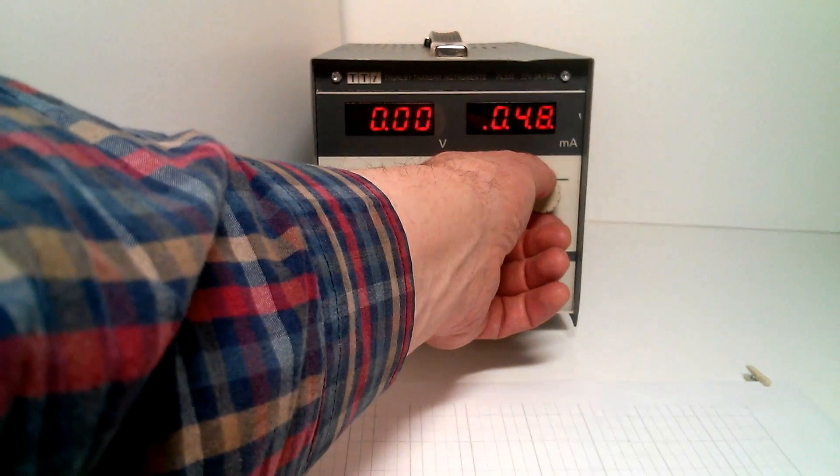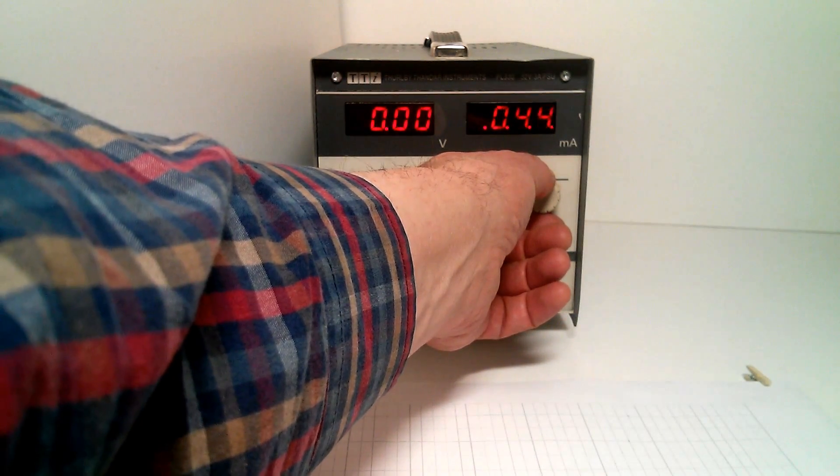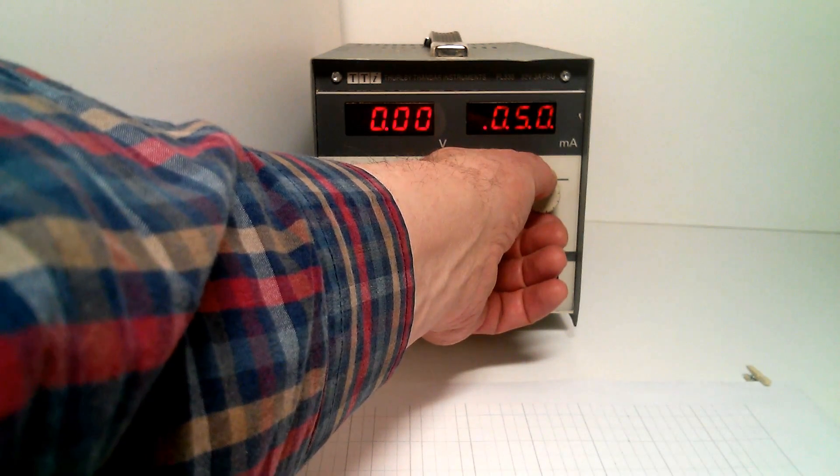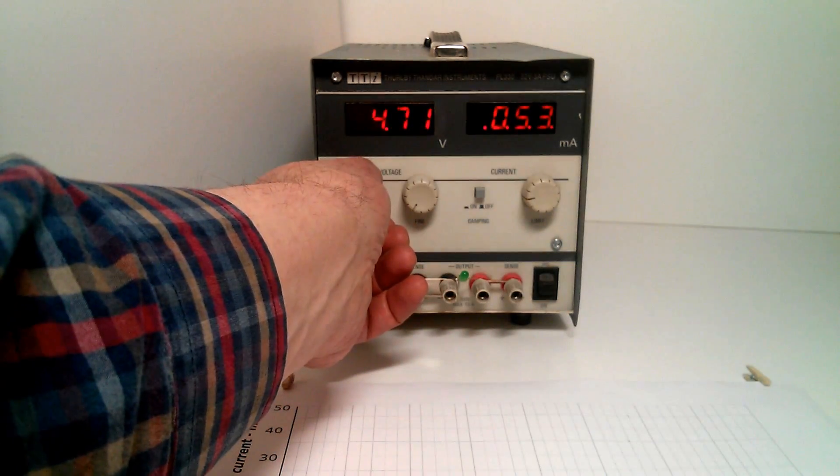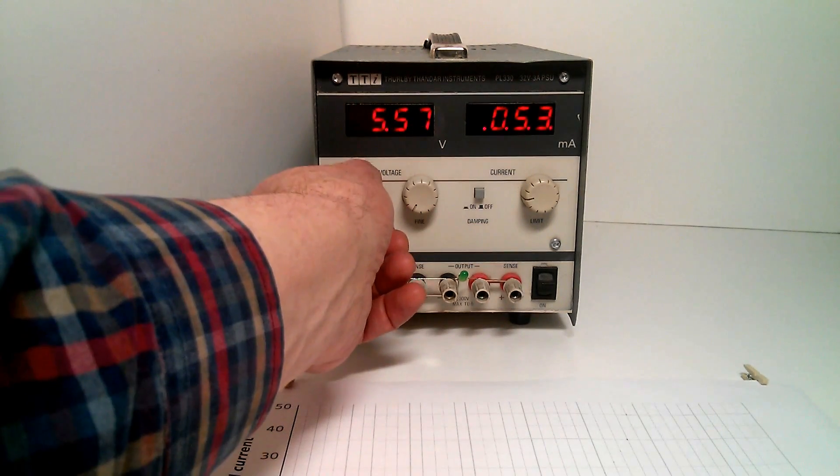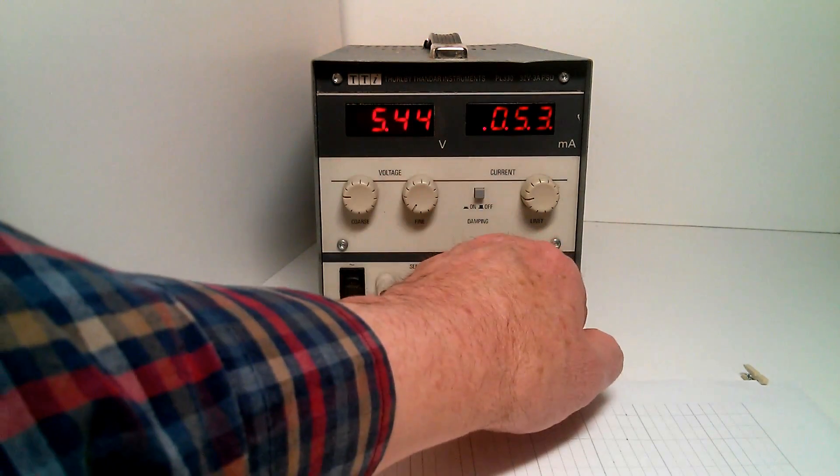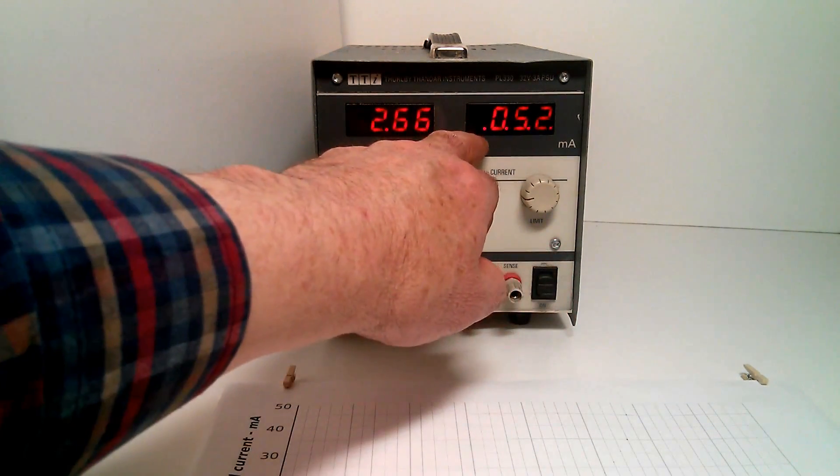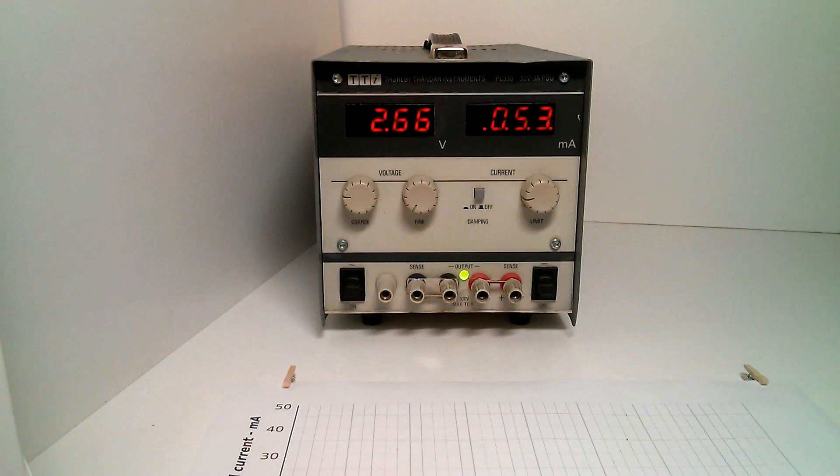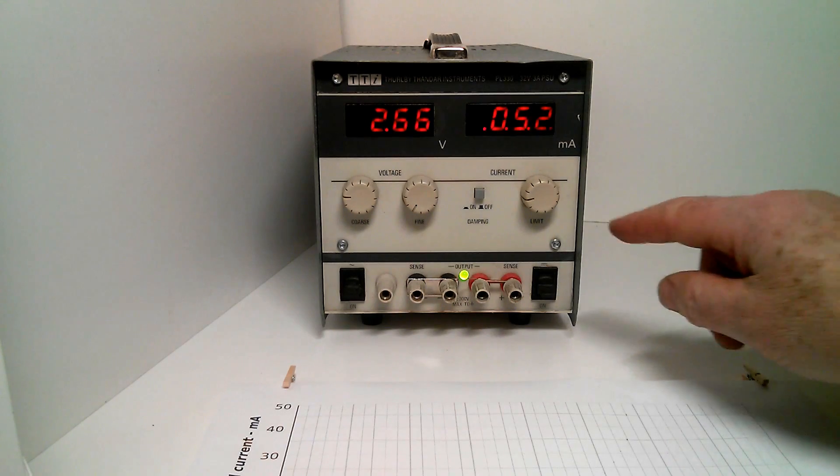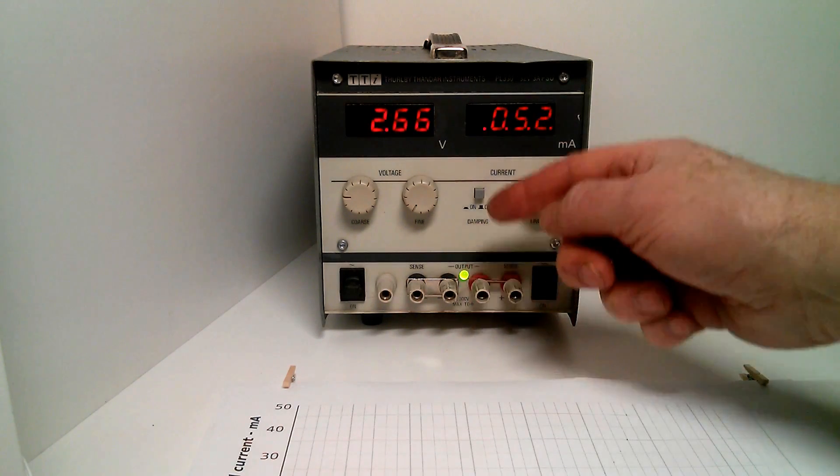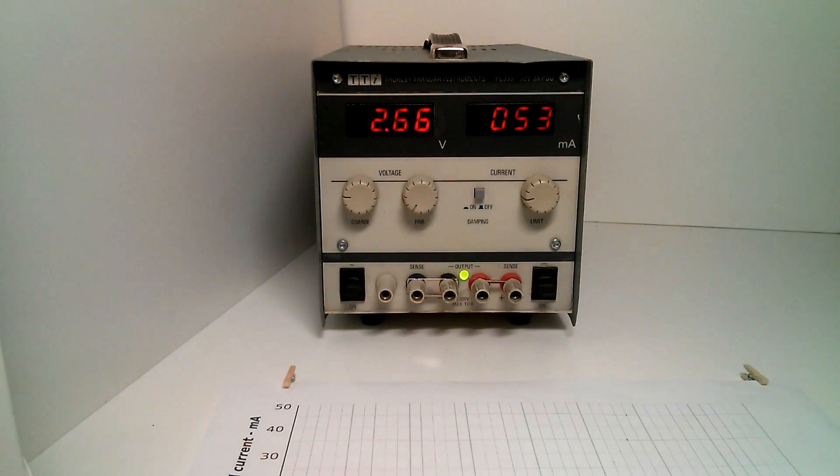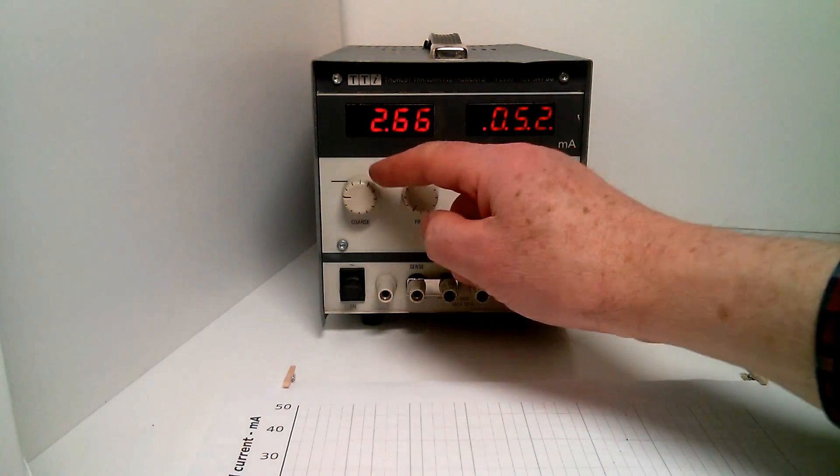We'll have a look at the LED at full current. Set it to 50 milliamps. We'll turn the voltage up a little bit, and we'll turn it on. The blinking dots on the milliamps display shows us we've gone into current limit at 50 milliamps. The LED is quite bright, and the voltage has stabilized at 2.66 volts.